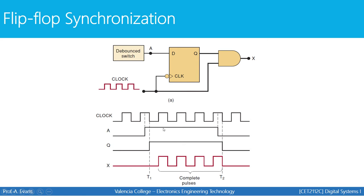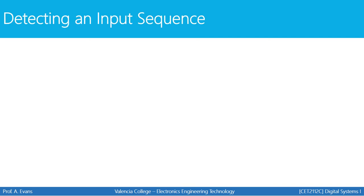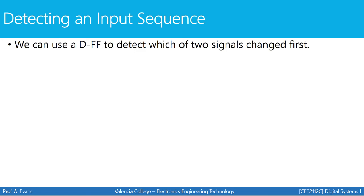That's one example of flip-flop synchronization. Another thing that we can do with a flip-flop is to detect an input sequence — meaning we can use a D flip-flop to detect which of two signals changed first.